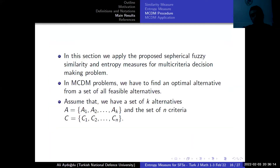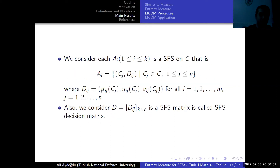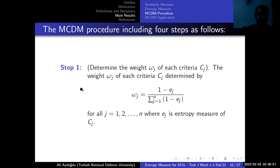We apply the proposed spherical fuzzy information measures to a multi-criteria decision making problem. In this problem, we want to find the optimal alternative. We assume we have K alternatives and N criteria. First, we construct the spherical fuzzy decision matrix, where rows represent alternatives and columns represent criteria. The procedure for multi-criteria decision making has four steps.